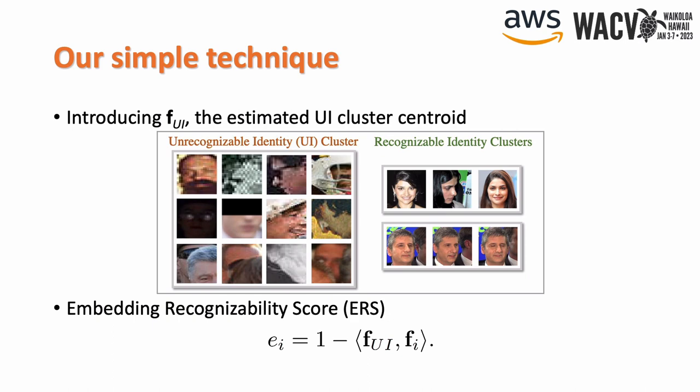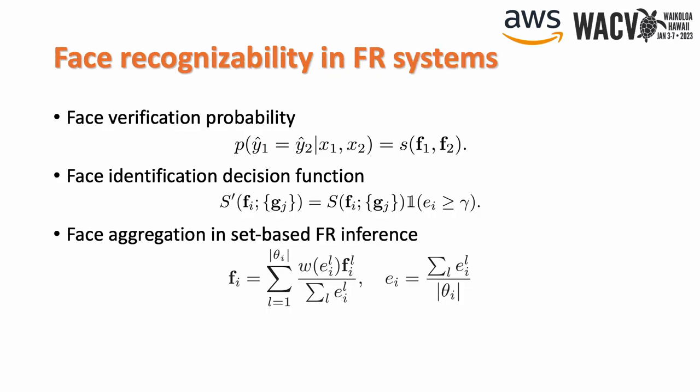We can then introduce an embedding recognizability score, or ERS, based on the feature distance of a face from the UI centroid. We can utilize the ERS in face recognition pipelines as a way to factor recognizability into the end-to-end inference — from 1v1 face verification to 1vN face search, and from single image-based to template-based use cases. It is easy to integrate the ERS accordingly with the formulation we provide for each setting. Our approach is lightweight and can also be applied to an arbitrary face recognition system off the shelf.